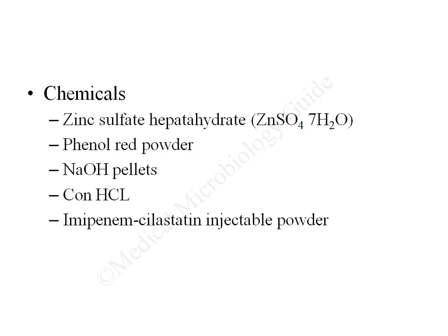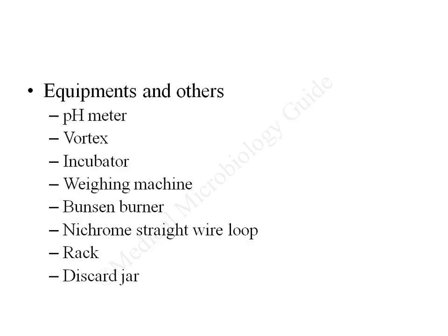The chemicals required for the preparation of solutions are zinc sulfate heptahydrate, phenol red powder, sodium hydroxide pellets, concentrated hydrochloric acid, and imipenem-cilastatin injectable powder. Equipment required includes a pH meter, vortex machine, incubator, and weighing machine. We also require a Bunsen burner, nichrome straight wire loop, rack, and discarding jar.